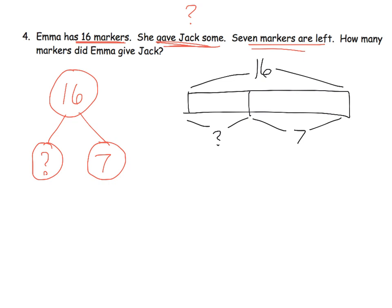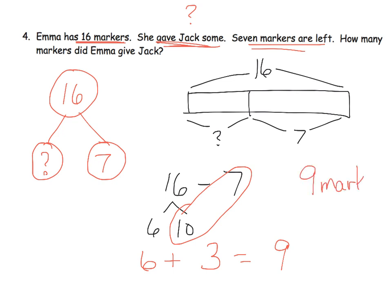We want to help students understand the problem. Then we're going to do the problem using numbers. Now we're going to write 16 minus 7. We're going to decompose a 10, so we've got 6 and 10. 10 minus 7 is 3. Add in the original 6, we now have 9. So how many markers did Emma give to Jack? She gave 9 markers. We know that that number right there is a 9.